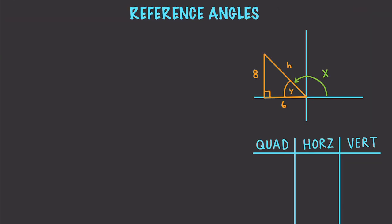A reference angle is just going to provide values that are needed to find another angle's value. And in this situation, this right here is our reference angle. I'm going to work through some examples, and everything's going to make a lot of sense.